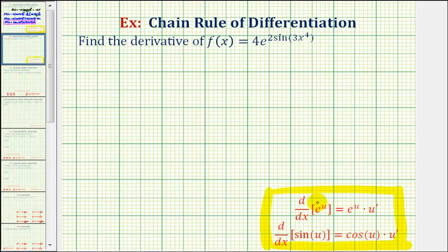Where u is equal to the inner function, and notice how the derivative is now given as a product, where the first factor is the derivative of the outer function, and the second factor, or u prime, is equal to the derivative of the inner function. So looking at our function and this first derivative formula, we should recognize that the inner function u is going to be equal to two sine of three x to the fourth.